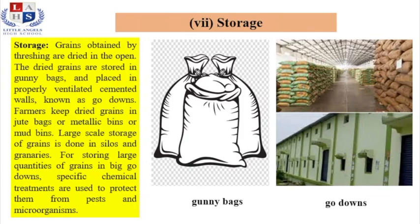These structures are popularly known as godowns, silos, or granaries. Storage at micro level is done in metallic bins, usually used at the household level. For storing large as well as small quantities of grains, it is necessary to treat the crop chemically to prevent it from pests, moisture, and microorganisms.